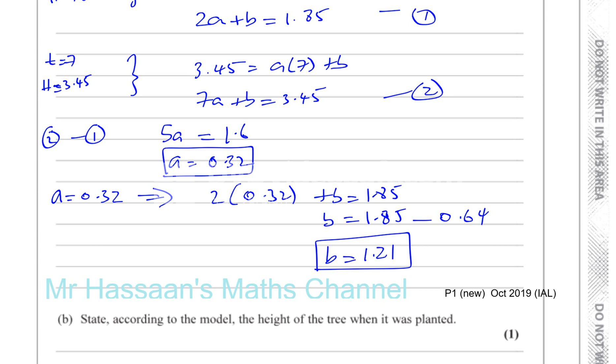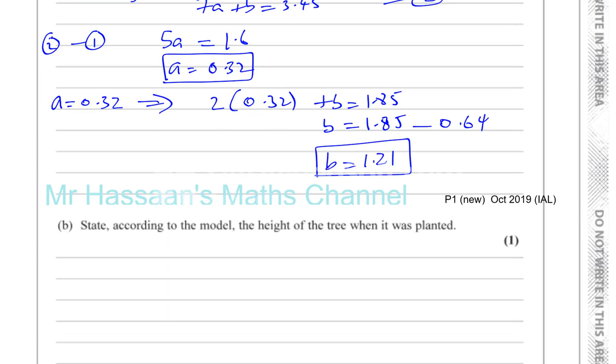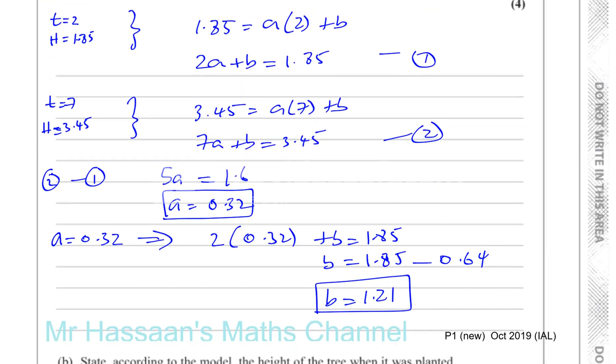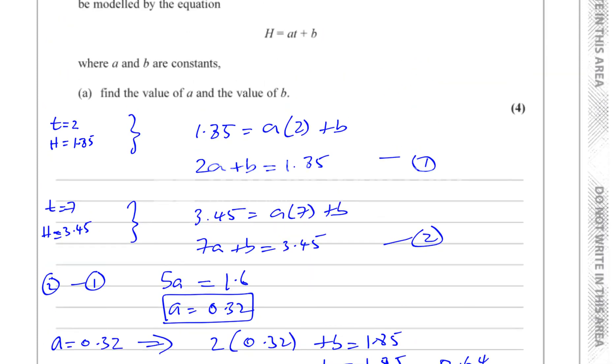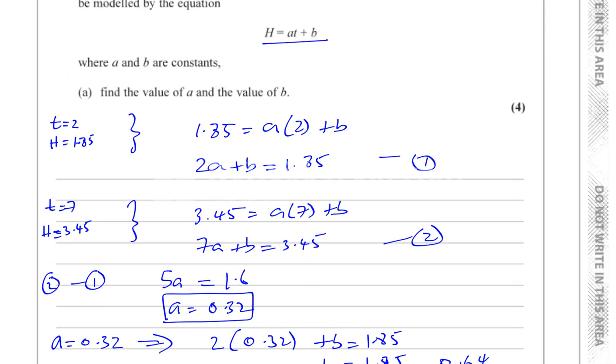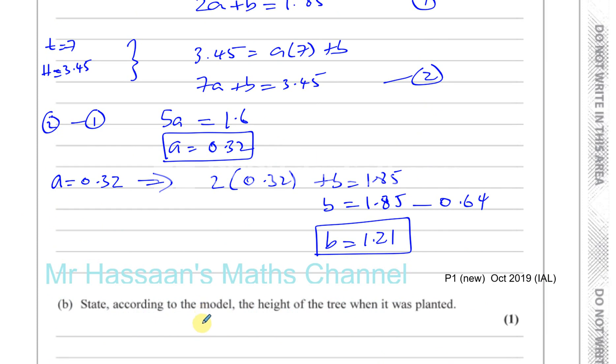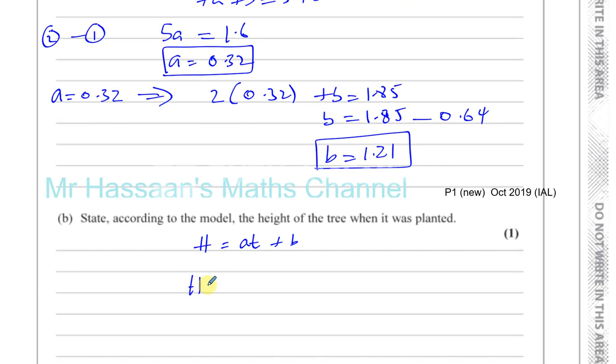Now it says state according to the model the height of the tree when it was planted. Now we know a and b, we can fill in the equation: H = at + b. So H = 0.32t + 1.21.